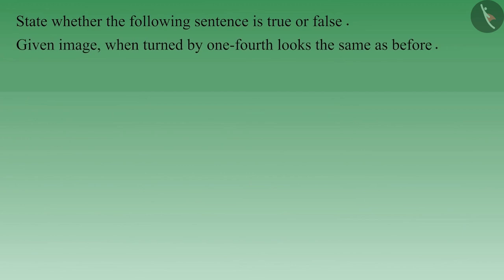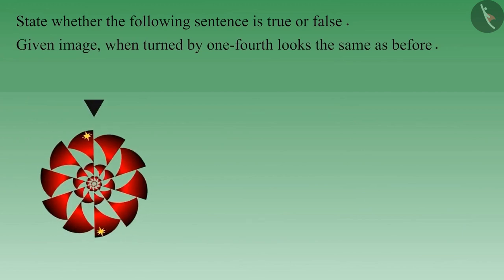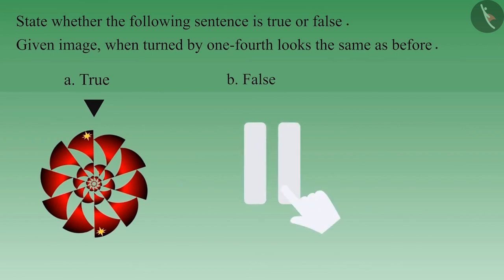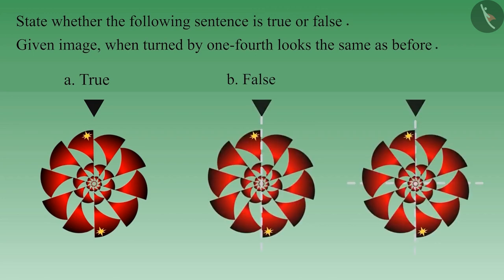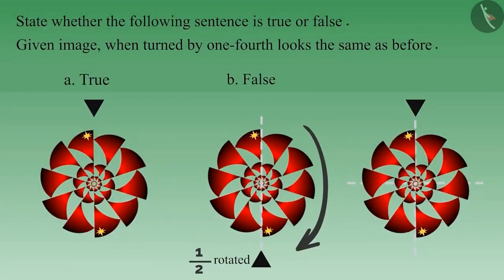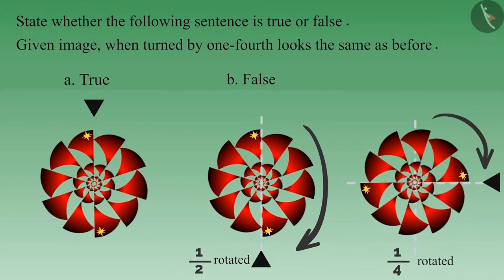Now let's see another example. On rotating the given image by one-fourth, it looks the same as before. You can stop the video here and think about the answer. If you consider this statement as true, then you must be thinking that on rotating the image by half, it will again look like this, and if it looks like this after rotating by half, then it will look the same when rotated by one-fourth as well. But it is not so — once again, take a closer look.